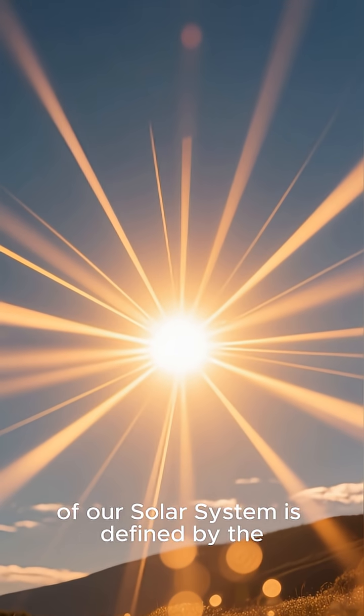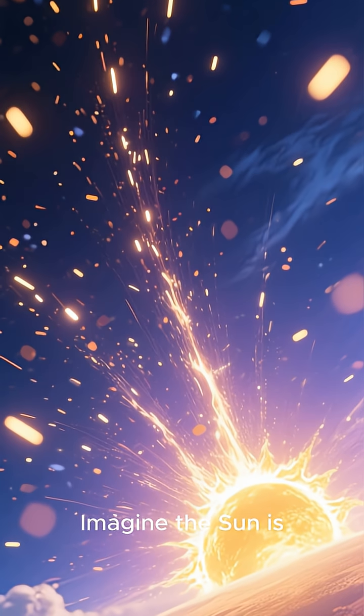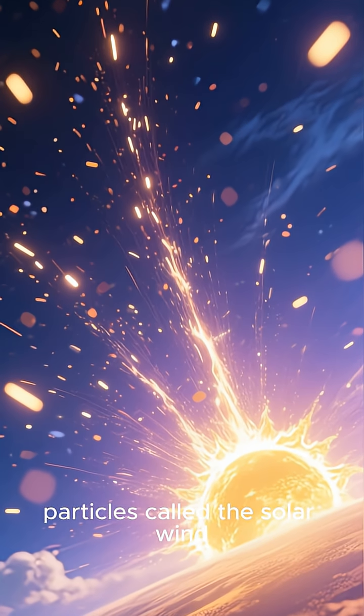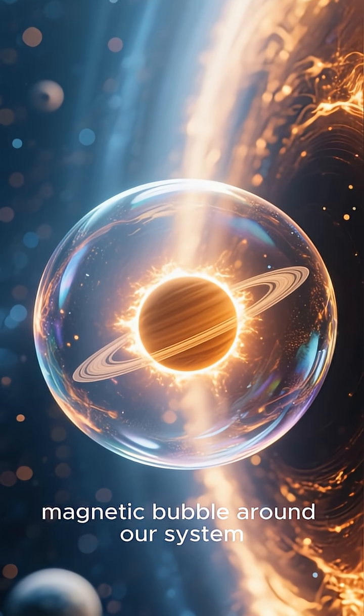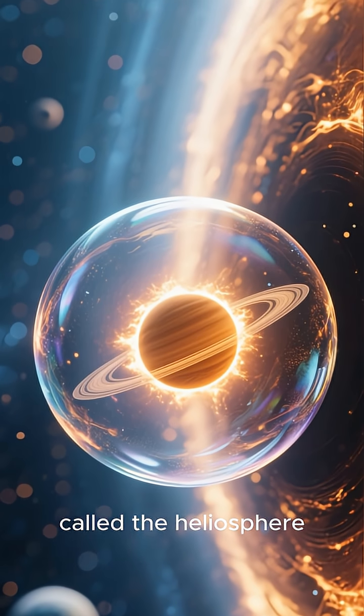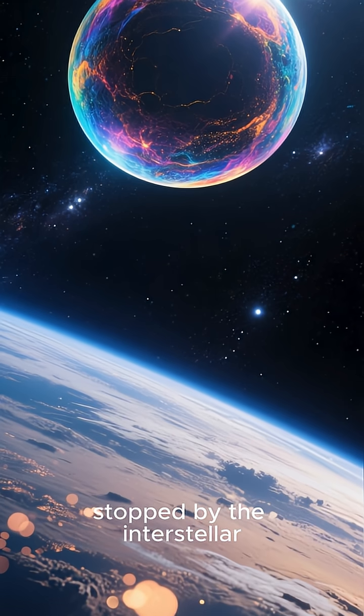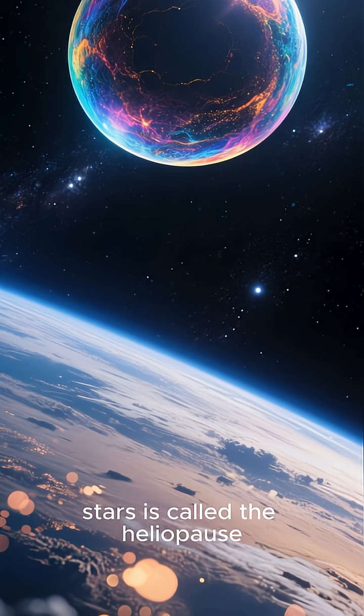The true boundary of our solar system is defined by the sun's influence. Imagine the sun is constantly blowing out a stream of charged particles called the solar wind. This solar wind creates a giant magnetic bubble around our system called the heliosphere. The edge of this bubble, where the sun's wind is finally stopped by the interstellar medium, the gas and dust between stars, is called the heliopause.